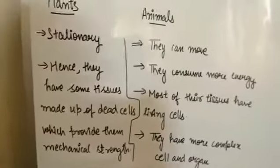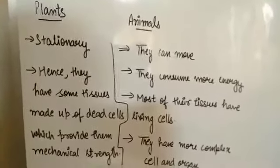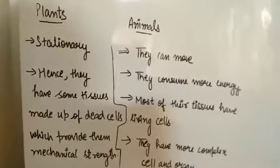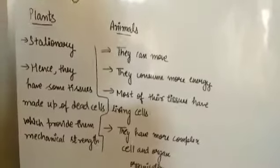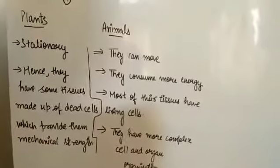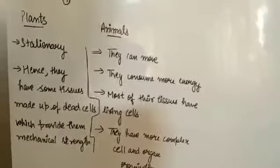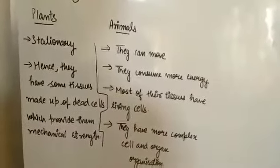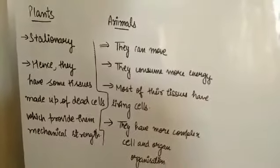Plants are stationary — they stay in one place and don't move. That is why plants have some tissues made of dead cells which provide them mechanical strength. Plants need more mechanical strength because they have to withstand various harsh weather conditions and harsh situations since they cannot move to protect themselves from danger. This is why most plant tissues are made up of dead cells — because dead cells are what provide mechanical strength.